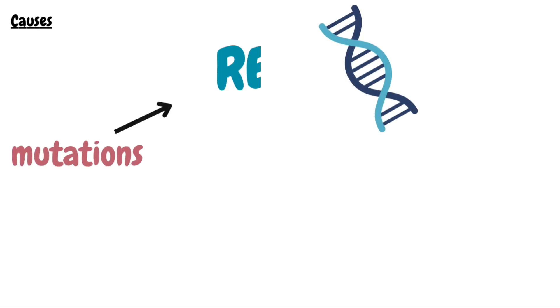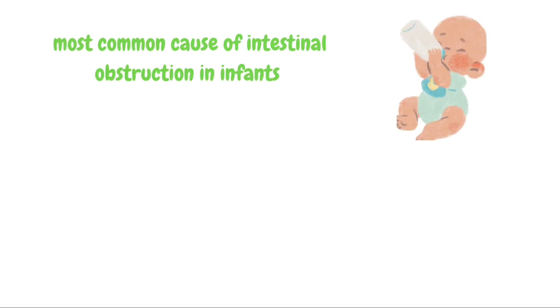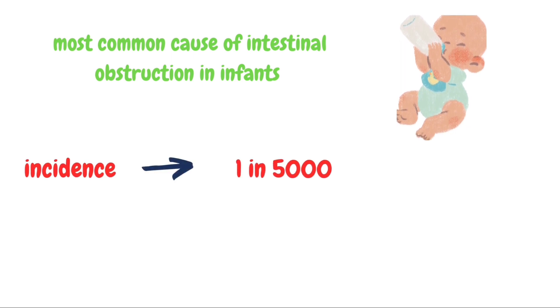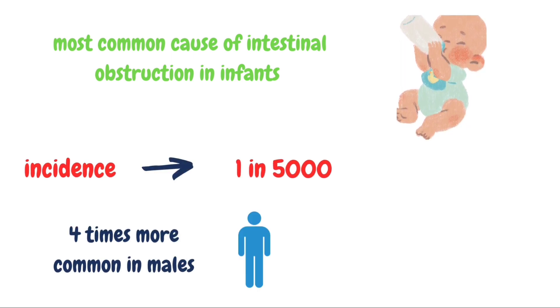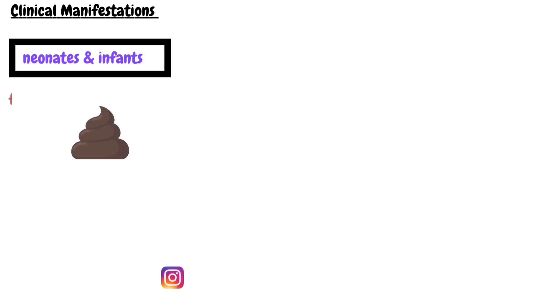Now we will talk about the causes of Hirschsprung's disease. It is caused by mutations in two genes — the RET gene and the EDNRB gene — which results in absence of ganglionic cells in certain parts of the colon. This disease is the most common cause of intestinal obstruction in infants. The incidence is one in 5,000 live births. It is four times more common in males than in females and follows a familial pattern in a small number of cases.